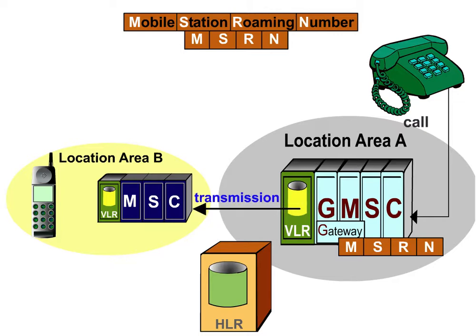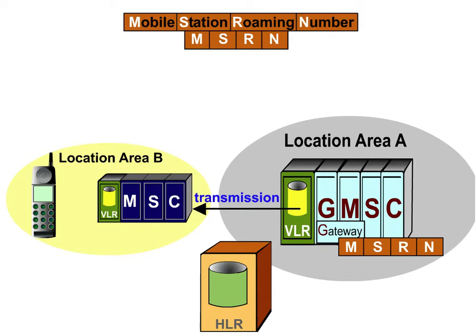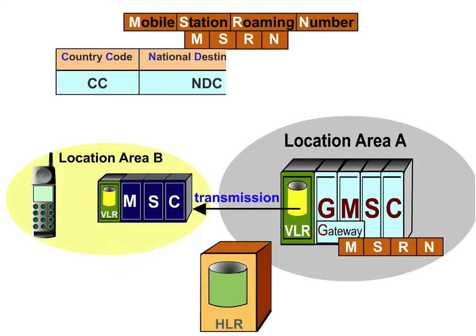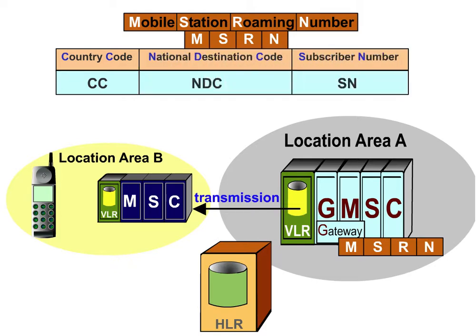The MSRN has the same structure as the MSISDN. It consists of the Country Code, CC, the National Destination Code, NDC, and the Subscriber Number, SN, which is different to the SN in the MSISDN.